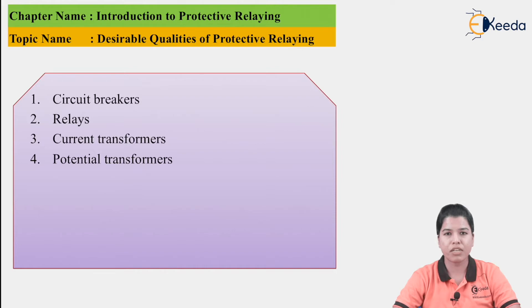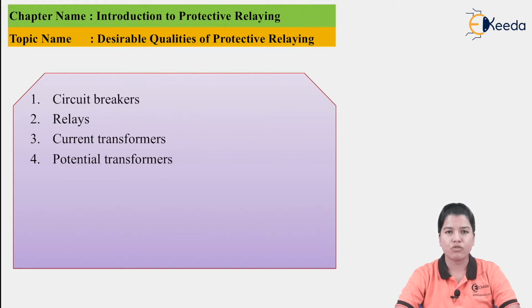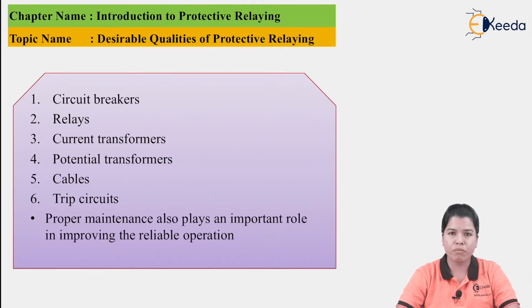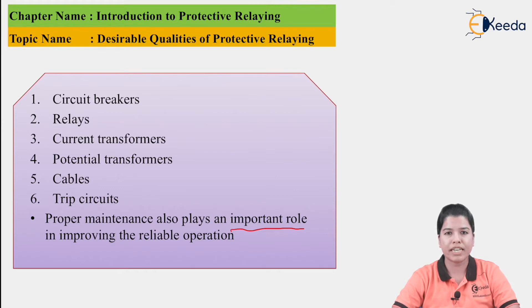Next is the Potential Transformer, which is connected in parallel with the power system. The primary winding is connected to the system while the secondary winding is connected to the relay. The voltage sensed by the potential transformer is provided to the relay via the secondary winding. Other equipments include cables and tape circuits. Proper maintenance also plays an important role in improving reliable operation — all equipments must be maintained regularly.